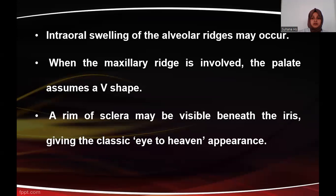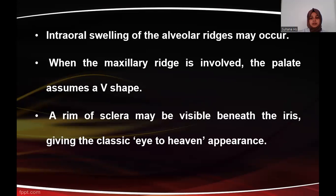Intraoral swelling of the alveolar ridge may occur, and when the maxillary ridge is involved, the palate assumes a V-shape — hence a cherubic child will have a V-shaped palate. A rim of sclera may be visible beneath the iris, giving a classic 'eyes to heaven' appearance. This is the characteristic feature of cherubism: a rim of sclera beneath the iris producing the eyes-to-heaven appearance.